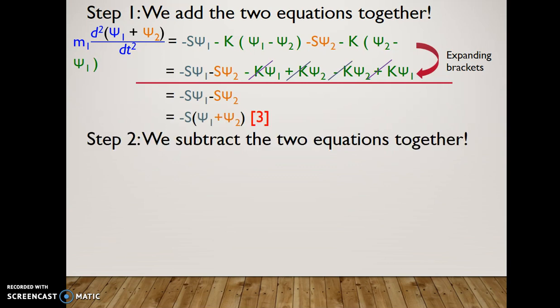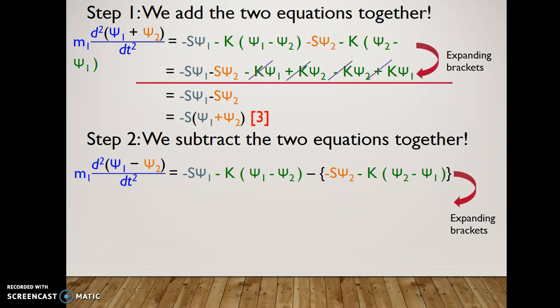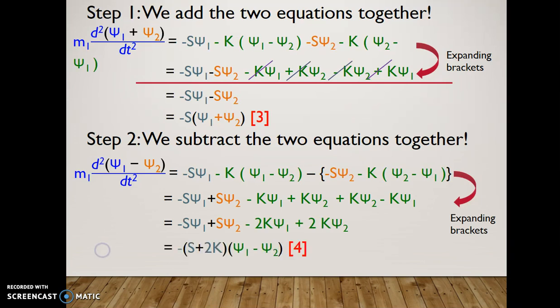Step 2, we subtract the two equations from each other. On the left-hand side, we have subtracted the displacement components inside the double differential. On the right-hand side, we see the minus has flipped the sign on the latter half of the equation, and therefore, they can be simplified as shown.